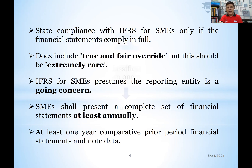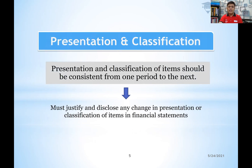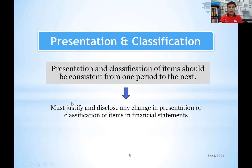Like the main version of IFRS Section 1, presentation and classification of items should be consistent from one period to the next period. If there is any change in the presentation or classification of items in the financial statements, that change must be justified and disclosed.